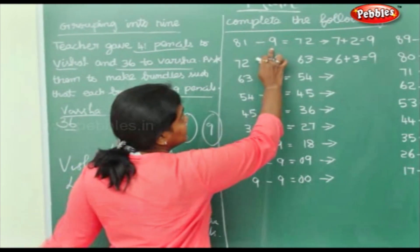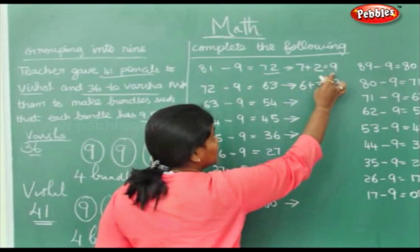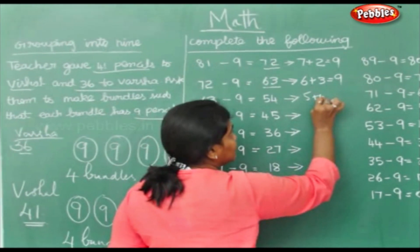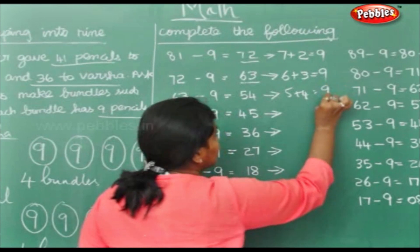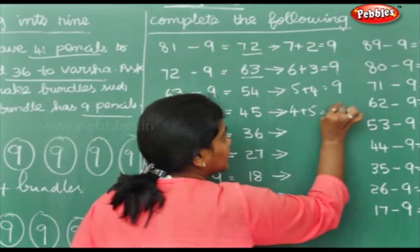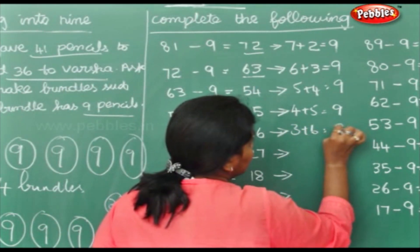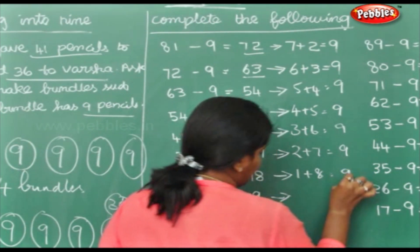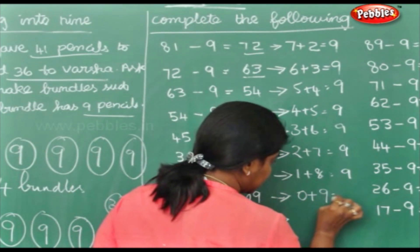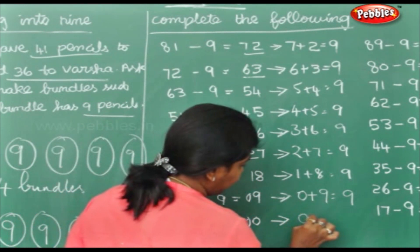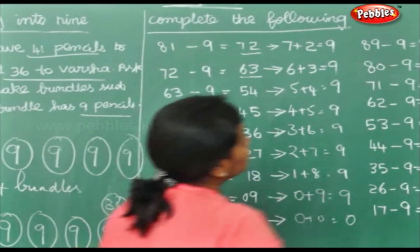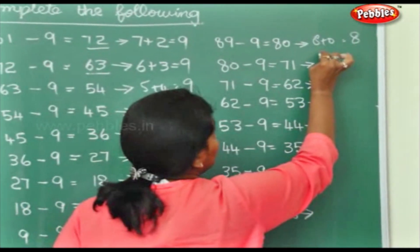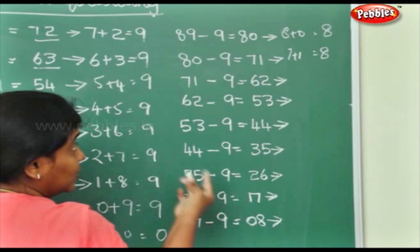Complete the following. 81 minus 9 is 72. They've added these 2 numbers which gives you 9. 63 plus these 2 numbers, 6 plus 3 is 9. Now again 5 plus 4, we've already done this. 5 plus 4 is 9. Again, 4 plus 5 is 9, 3 plus 6 is 9, 2 plus 7 is 9, 1 plus 8 is 9, 0 plus 9 is 9. Again here 9 minus 9 is 0. 0 plus 0 will be 0. Now we'll be doing this for 8s.